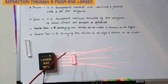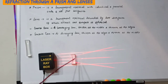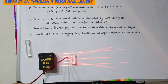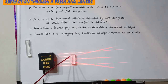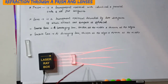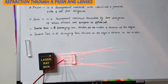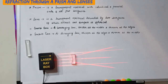A concave lens does not have a real focus. This lens is a plano-concave lens, as one surface of this lens is plane and the other surface is concave. Here also the parallel rays of light get diverged and appear to meet at a point, and that point is called the virtual focus of this plano-concave lens.